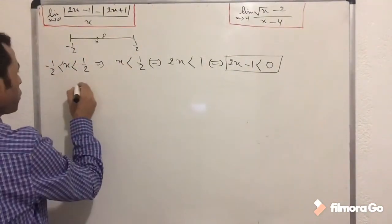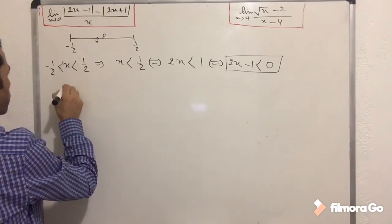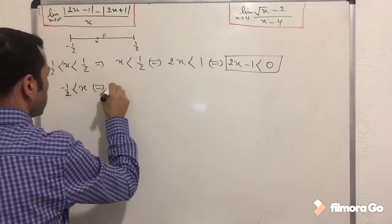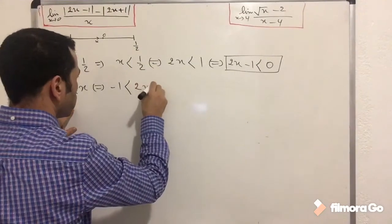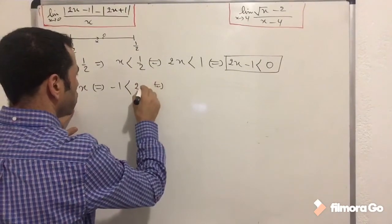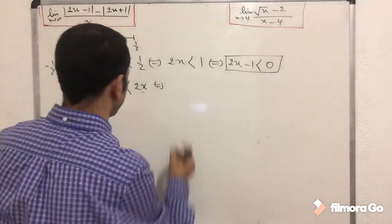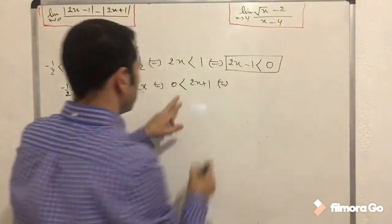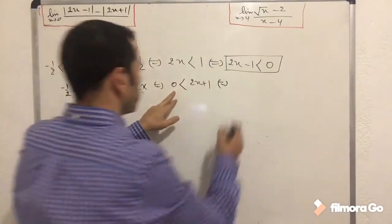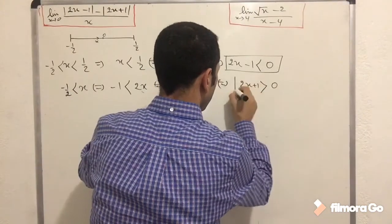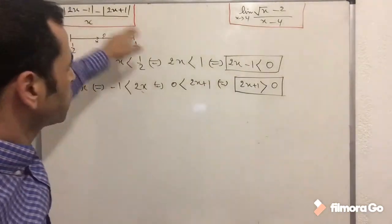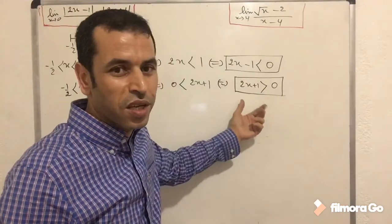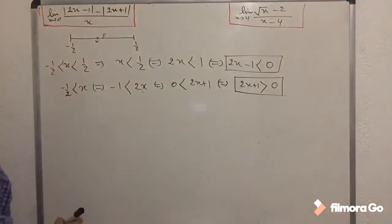On the other side, minus 1 over 2 is strictly less than x, which means minus 1 is strictly less than 2x. Bringing the 1 to the other side gives 2x plus 1 is greater than 0 — it's positive. So we are allowed to tick off the absolute value and replace it with a plus sign.